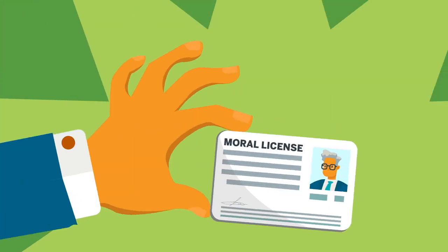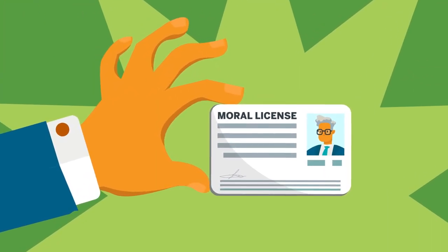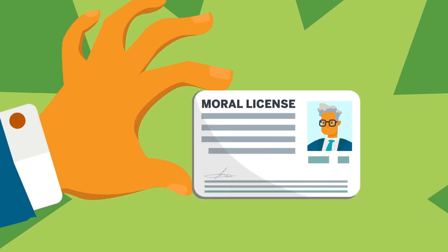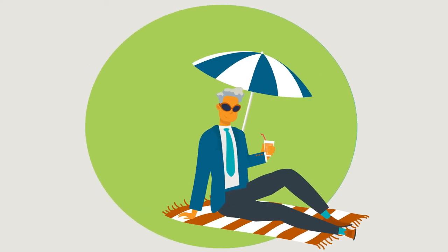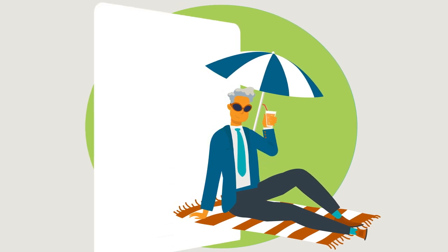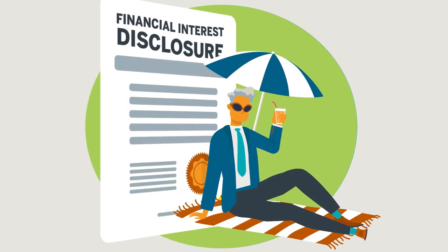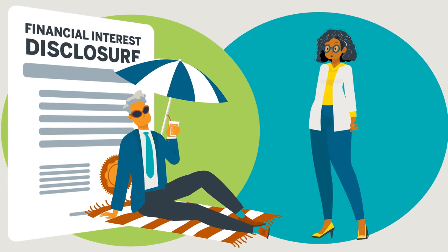Be careful to guard against moral licensing, which is the tendency everyone has to give themselves permission to be a little more self-serving in a certain situation if they've also acted ethically. In other words, researchers who have disclosed their financial interests may unconsciously give themselves permission to act in a more self-serving manner than those researchers who have not disclosed their financial conflicts.